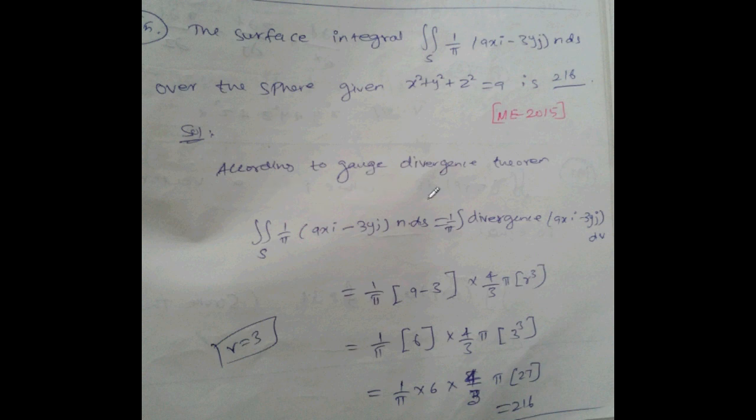According to Gauss theorem: 1 divided by 9, xi vector minus 3y j vector, n ds.